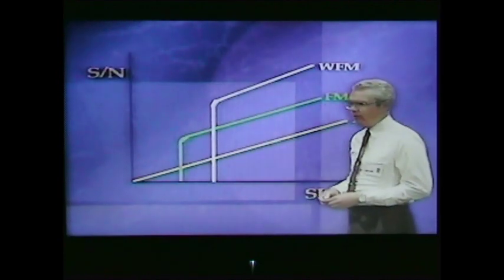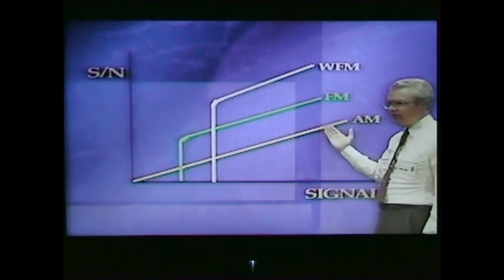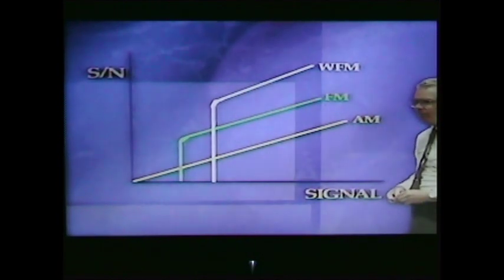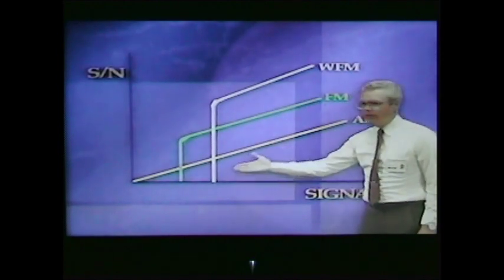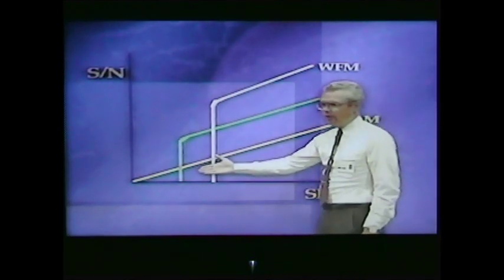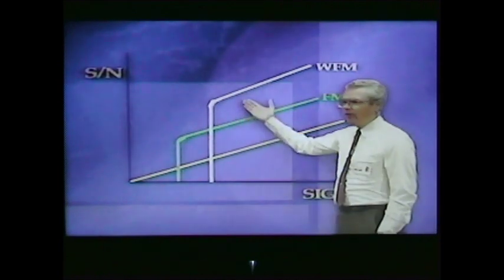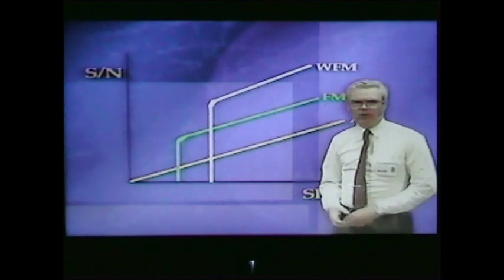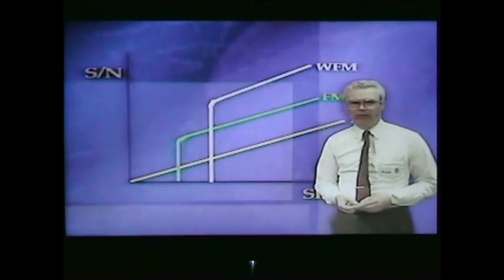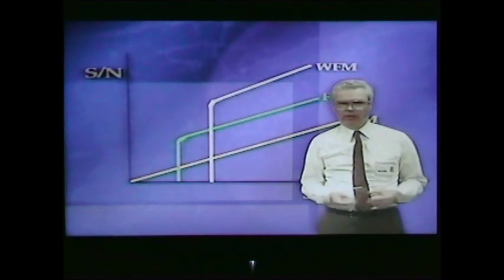First, the signal-to-noise improvement shown on this chart. You'll see three lines — the bottom one corresponds to amplitude modulation, or AM. This is a plot of signal-to-noise versus signal input on the horizontal axis. As the signal strength increases, the signal-to-noise increases on AM, but notice the FM line in the middle: there is a threshold after which the signal-to-noise improvement is much greater. The third line at the top represents wideband FM, as might be used for FM broadcasting — those transmitters are deviated plus or minus 75 kHz under modulation, so the improvement is much greater, but it has a rather high threshold requiring much more signal strength.